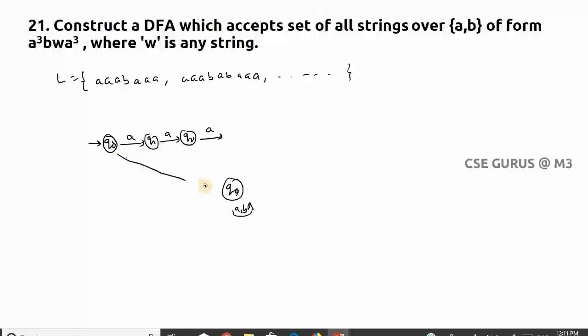But if I get b here at any state, I need to go to non-final state. So I'll take q_dead, so I need to connect b here, I need to connect b here, I need to connect b here.